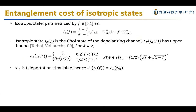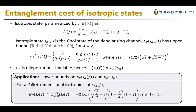We further apply the bound to explore isotropic states, for which both distillable entanglement and entanglement cost are difficult to estimate with no closed-form solutions yet. For the case d equals two, people can calculate the entanglement of formation. Applying our bound, we obtain an analytical lower bound for the entanglement cost of isotropic states — equivalently the entanglement cost of the depolarizing channel — for arbitrary dimension d and arbitrary noise parameter f.